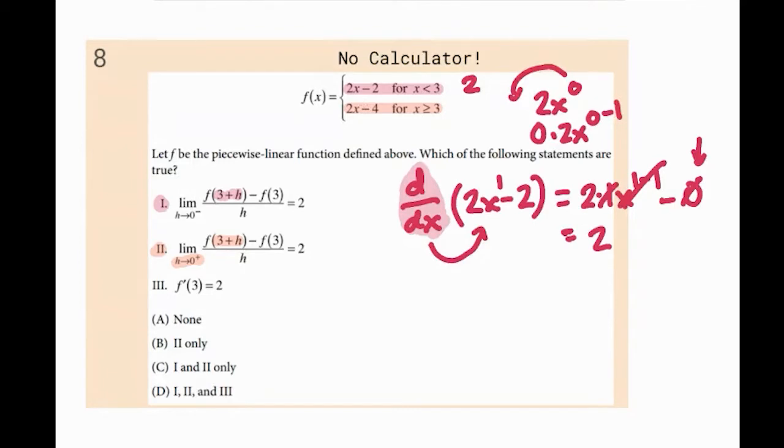If you do the same thing on the next piece, the orange piece here, it's also going to be two. Because the derivative of two x is, we already showed that it was two, the derivative of negative four is zero. So that's going to be two. So Roman numeral one and two are both true.